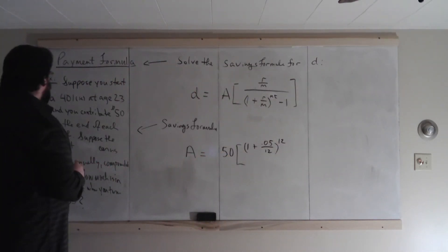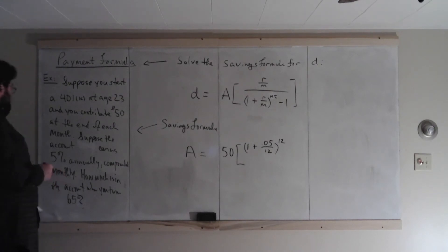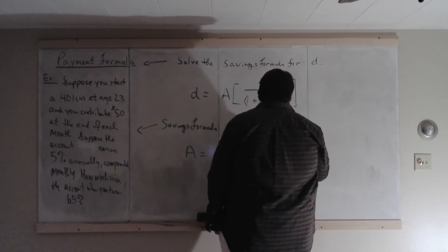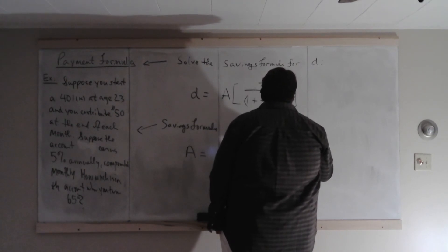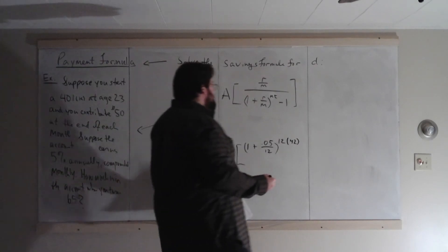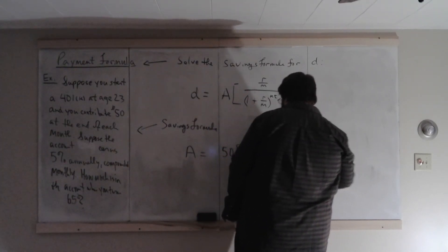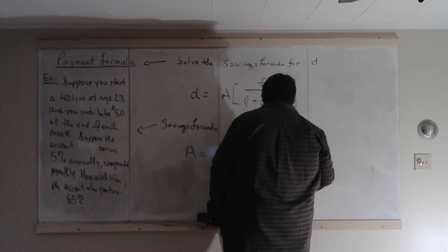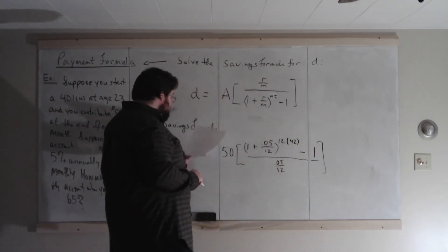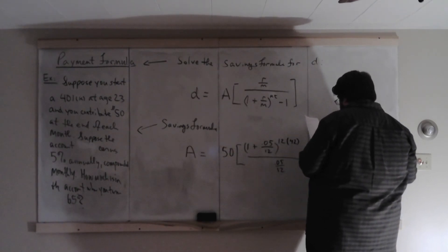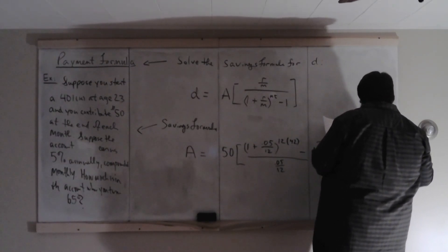Well, you start at age 23, and you're making these deposits until you turn 65. Well, 23 from 65 is 42. So T is 42, and it's already in years. Then we subtract 1, and then we divide by .05 over 12, and what does this equal? This is approximately equal to $85,567.43.